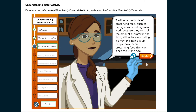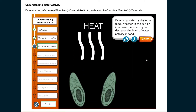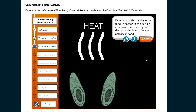Traditional methods of preserving food, such as drying corn or salting meat, work because they control the amount of water in the food, either by evaporating it away or binding it up. People have been preserving food this way since the Stone Age. Removing water by drying a food, whether in the sun or in an oven, is one way to decrease the level of water activity in food.